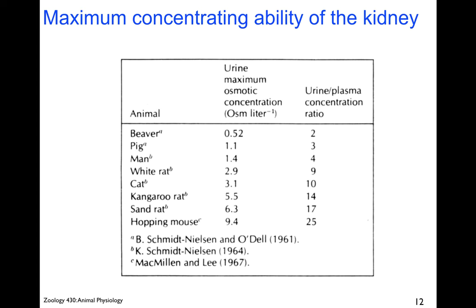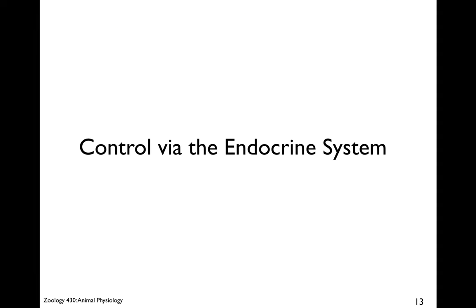The maximum concentration ability of the kidney is related to the length of the loop of Henle. You can see from this table that it is very much correlated with the osmotic challenges of the animal. Mesic animals that don't have water limitation have modest urine-concentrating ability. Animals that live in the desert can have very highly concentrated urine, and they tend to be smaller animals.